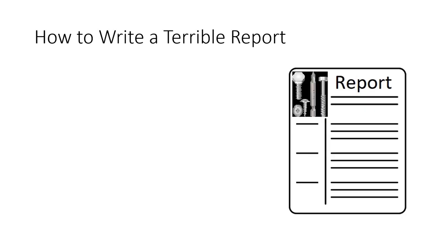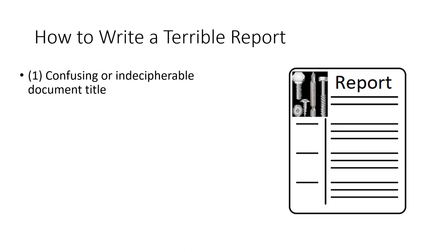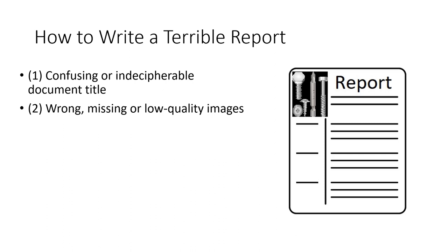So how do you write a terrible document? First one: a confusing or indecipherable document title. Next: wrong, missing, or low-quality images. If we're putting images or graphics in there, we want them to match up and make sure everything conveys what we're trying to say to the reader. Flowery or emotional language — we don't want to get into flowery prose like we're writing a poem or a short story for a horror novel. Flowery and emotional language is out the window.